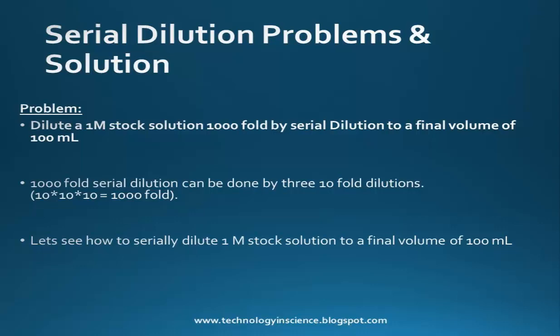Let's look at some calculations. Say you want to dilute a 1 molar stock solution 1000-fold by serial dilution to a final volume of 100 ml. A 1000-fold dilution can be achieved by performing a 10-fold dilution 3 times, since 10 × 10 × 10 equals 1000.